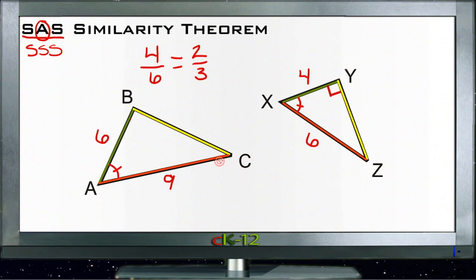Then the orange sides of both triangles, the smaller one is six, and the larger one is nine, that also reduces to two out of three. So the ratio of those two sides is the same. They're in the same proportion.